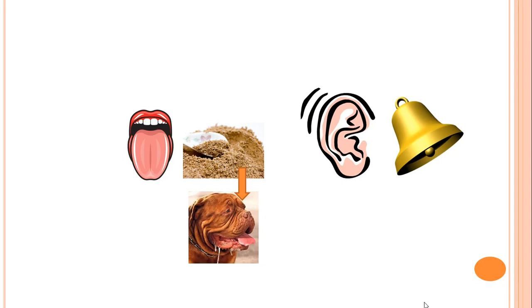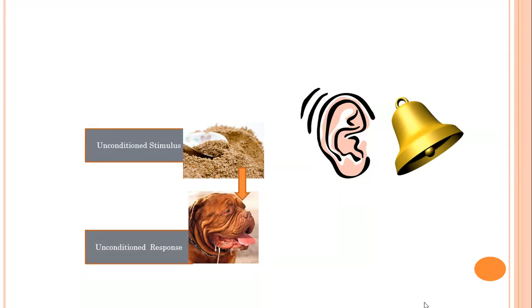So when you give a dog food powder, the dog will salivate naturally. You don't have to teach that. And so, therefore, that is our unconditioned stimulus and our unconditioned response.